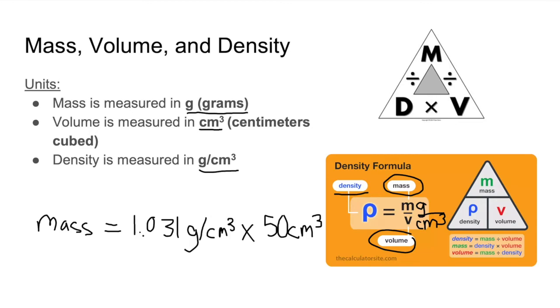Alright, so we'll multiply 1.031 grams over centimeters cubed by 50 centimeters cubed. So first thing that we're going to do is we'll cancel out these units. And then we get 51.55 grams.